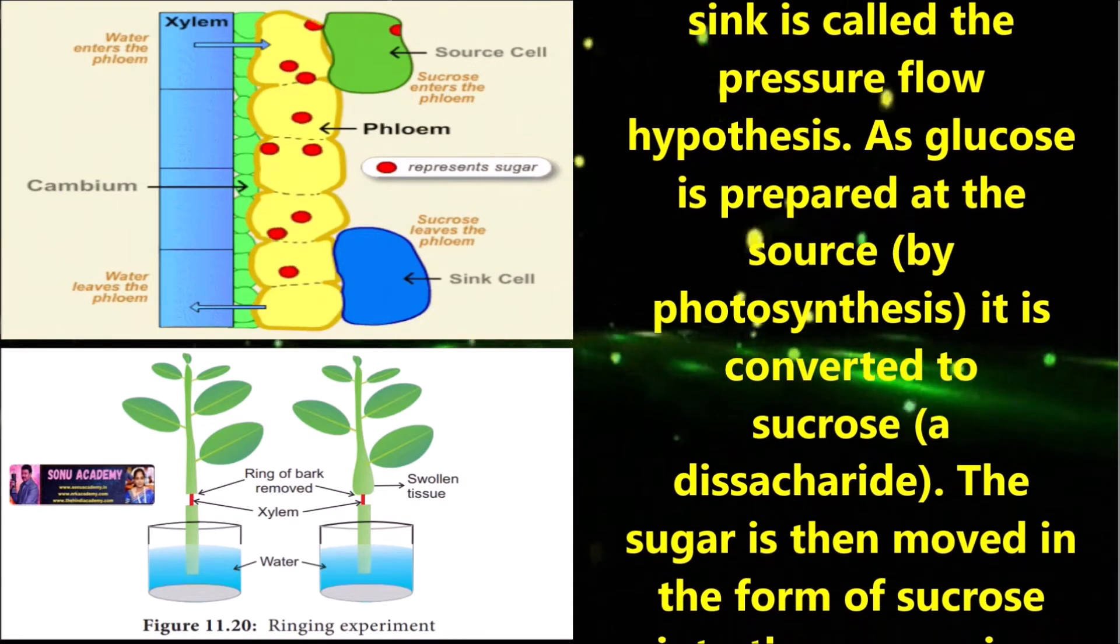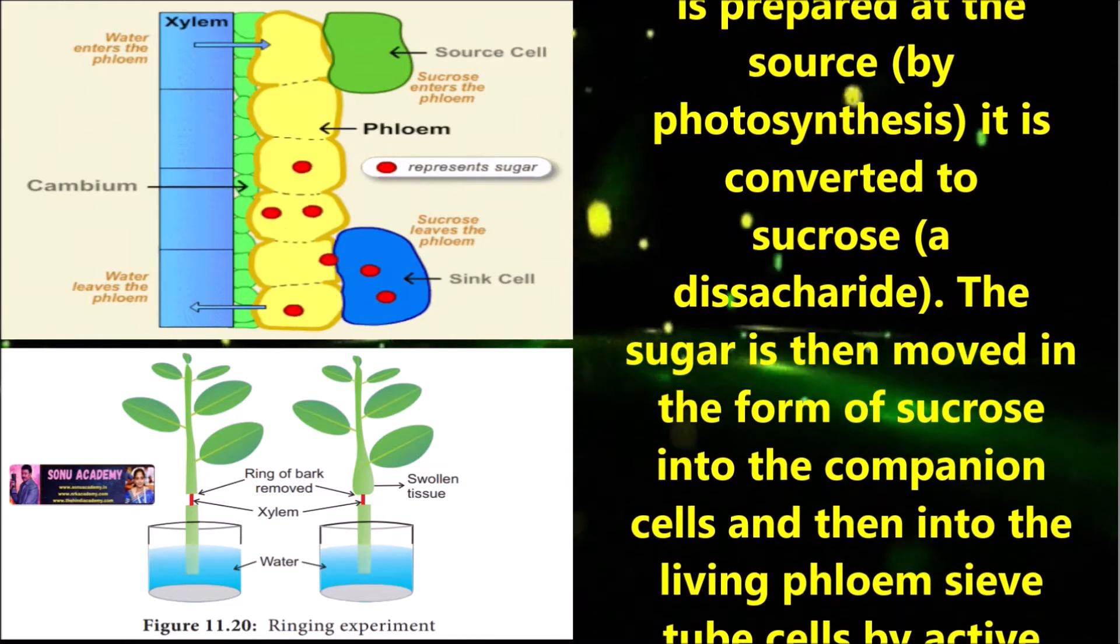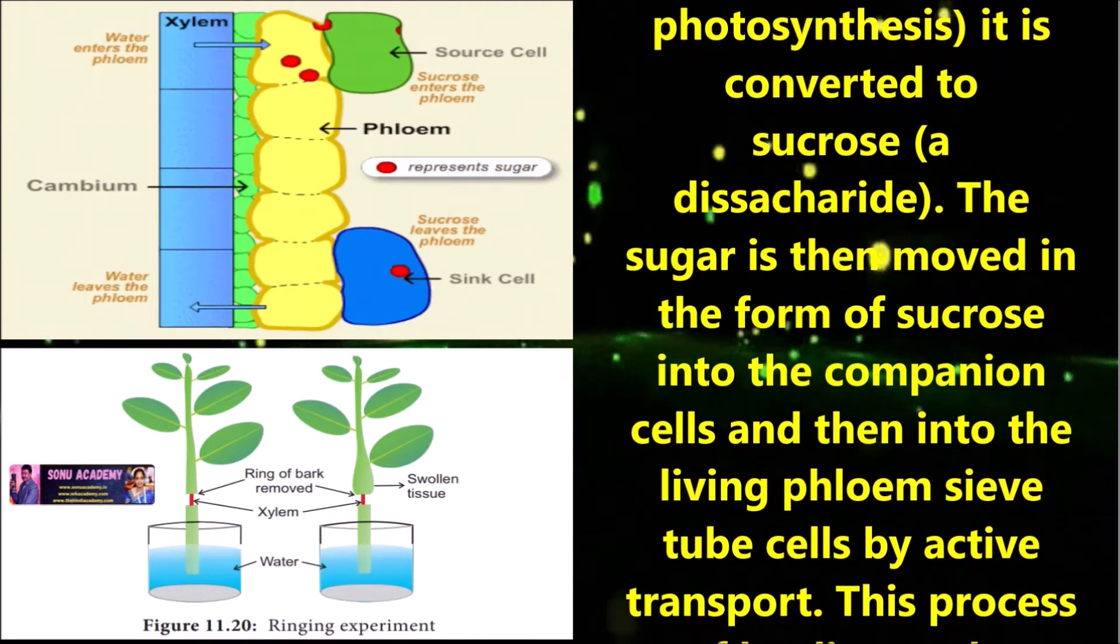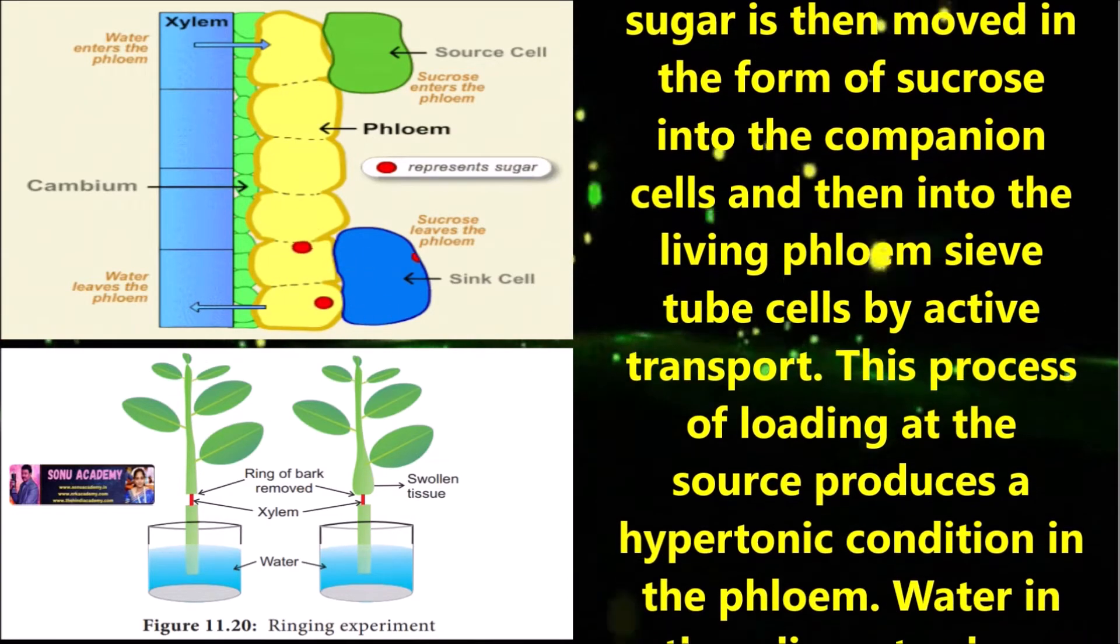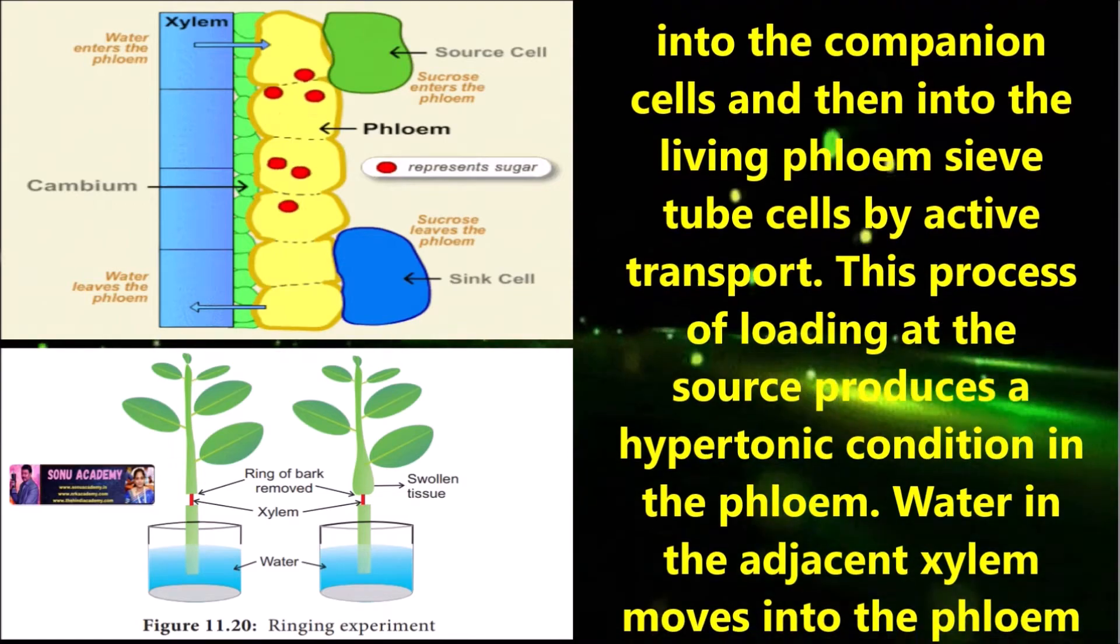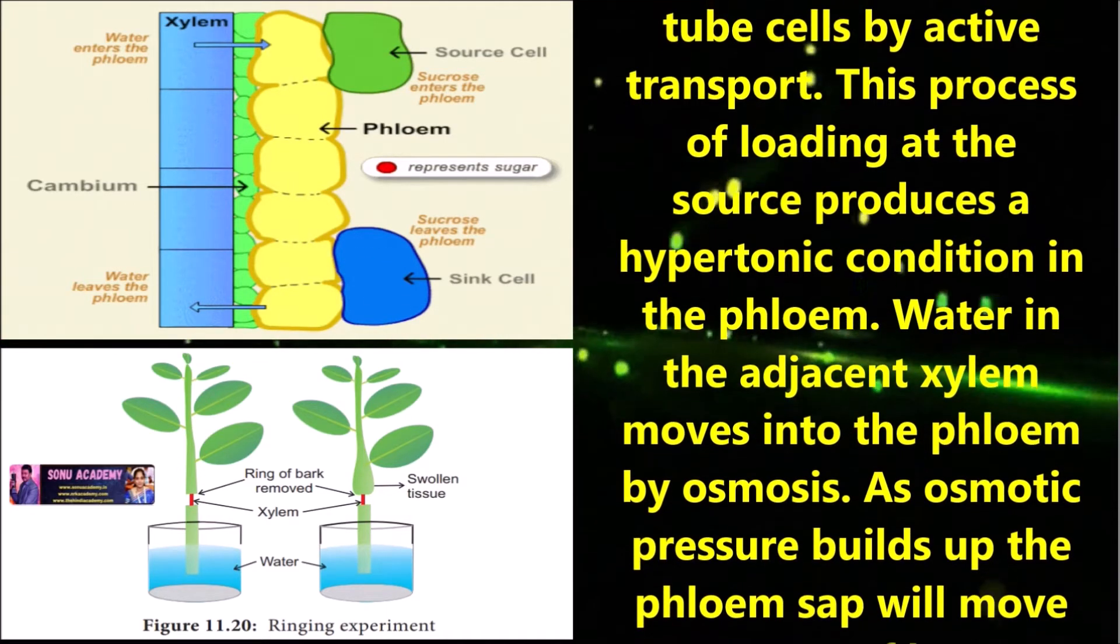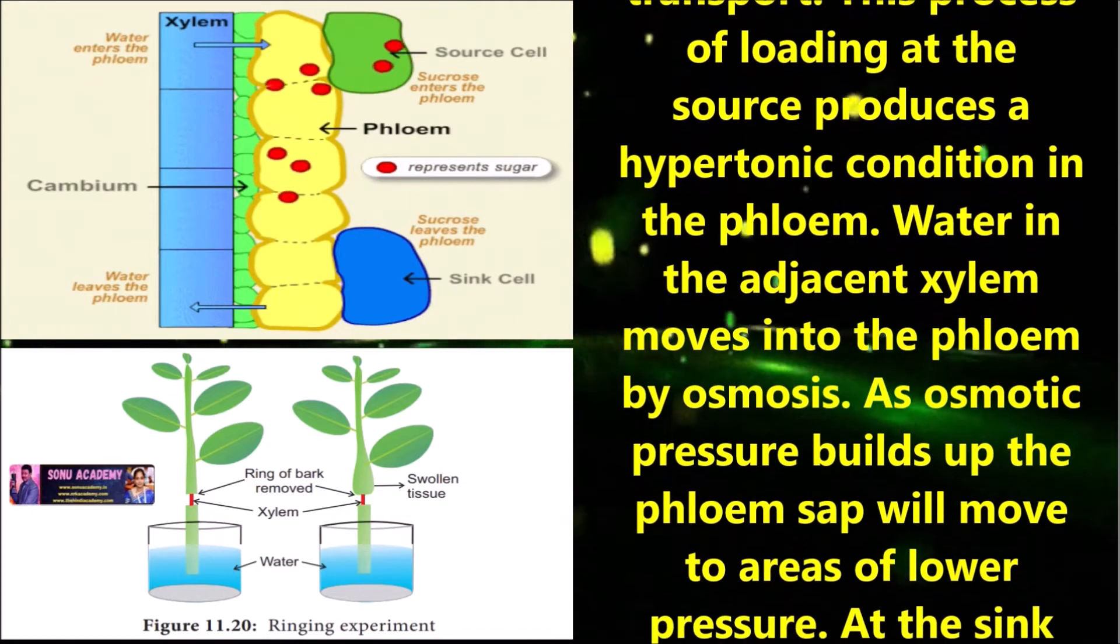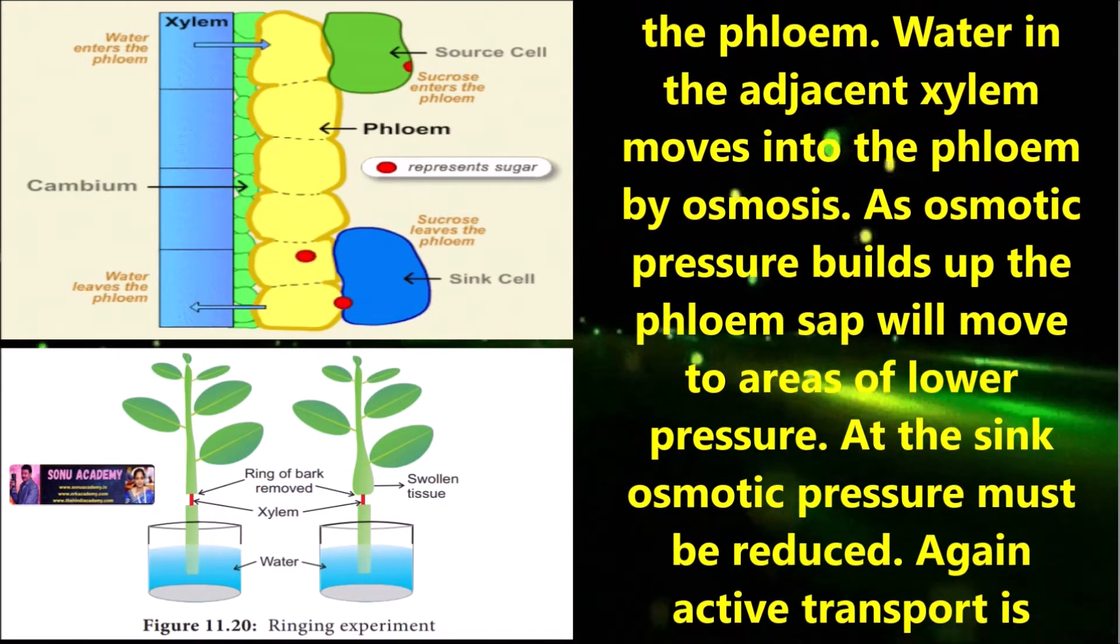The sugar is then moved in the form of sucrose into the companion cells and then into the sieve tube cells by active transport. This process of loading at the source produces a hypertonic condition in the phloem. Water in the adjacent xylem moves into the phloem by osmosis. As osmotic pressure builds up, the phloem sap will move to areas of lower pressure.